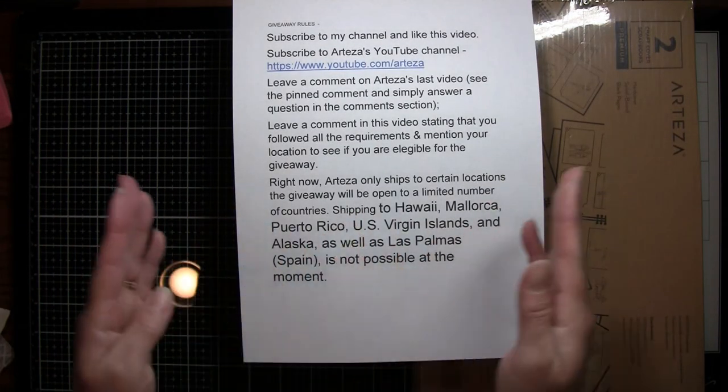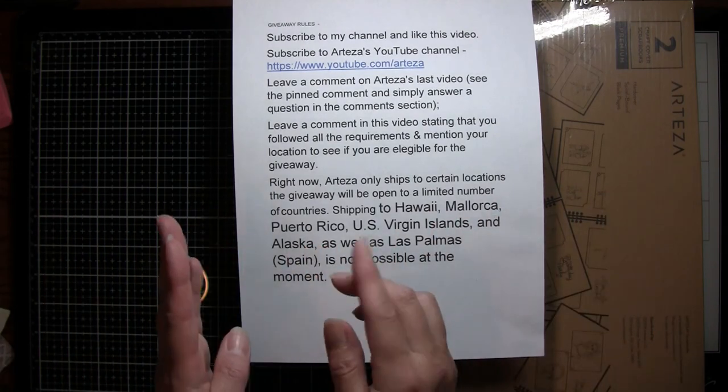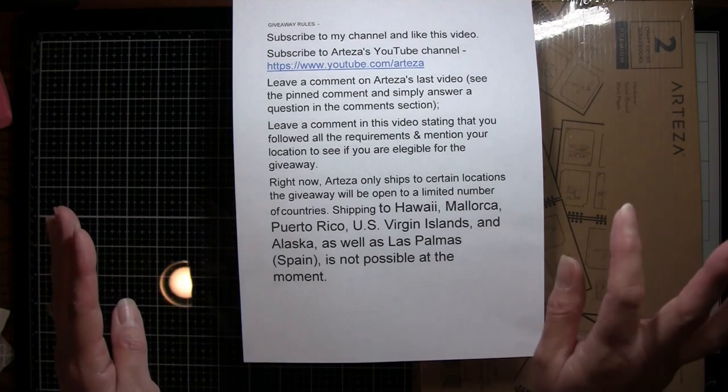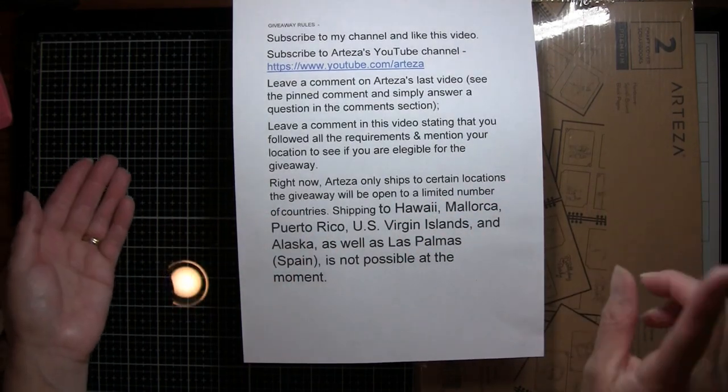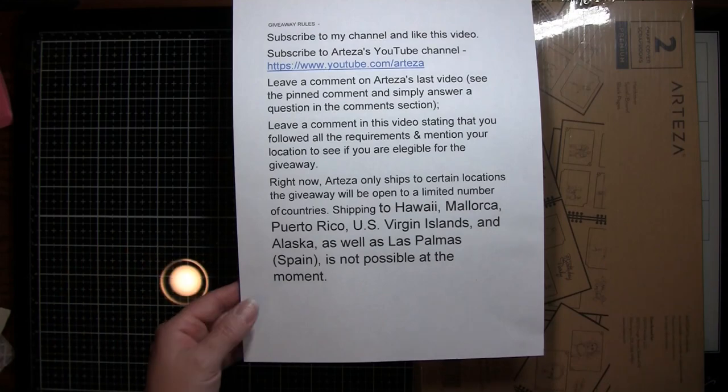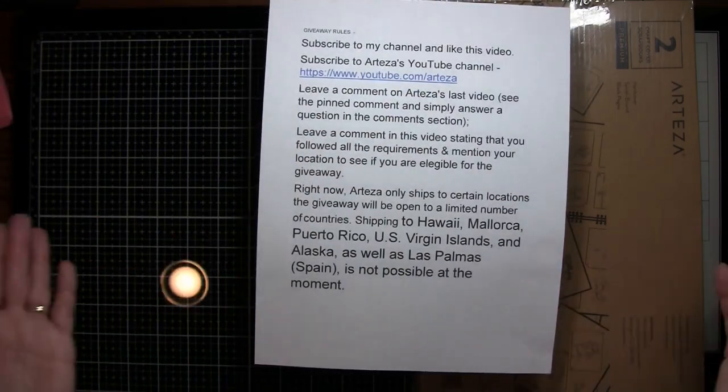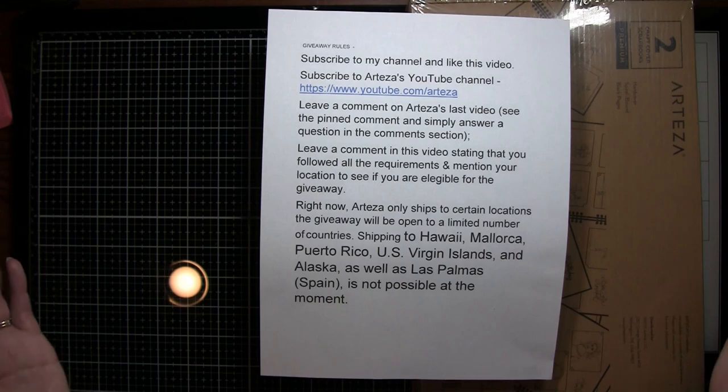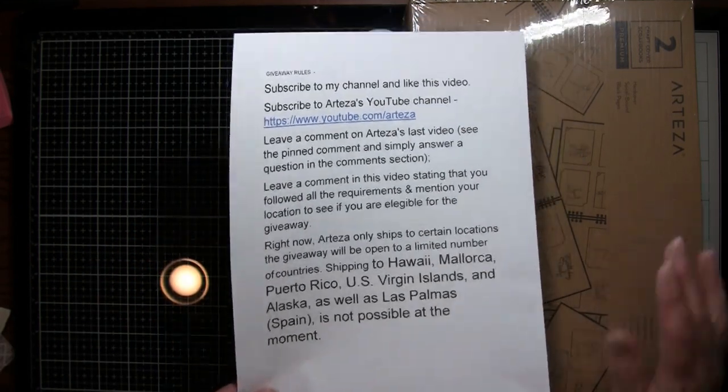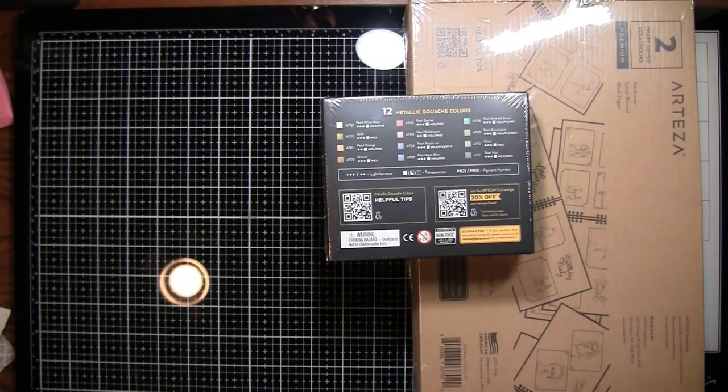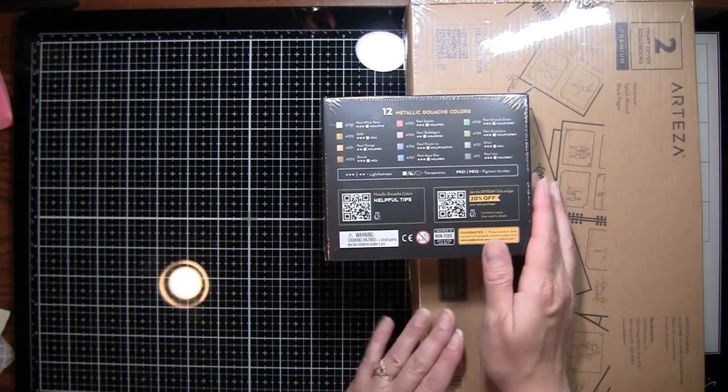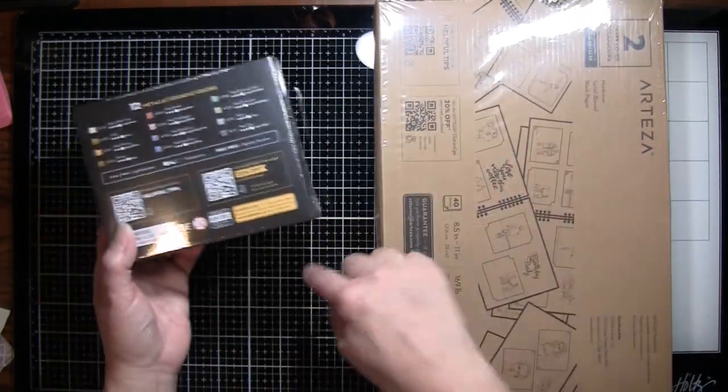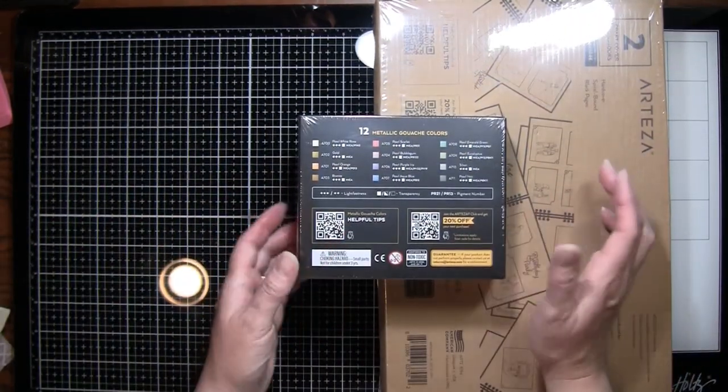All the rules will be in the description box below this video. A lot of times it'll say like if it's on your computer it'll say more information and you click on that. Or if it's on your phone a lot of times it's just a little white gray arrow on the right hand side of your screen below the video screen. That's always a good place to look in everybody's videos if you have questions or want to know where they got something.